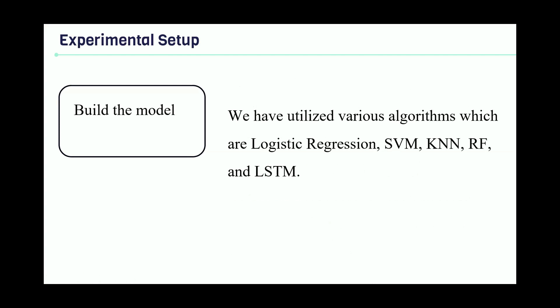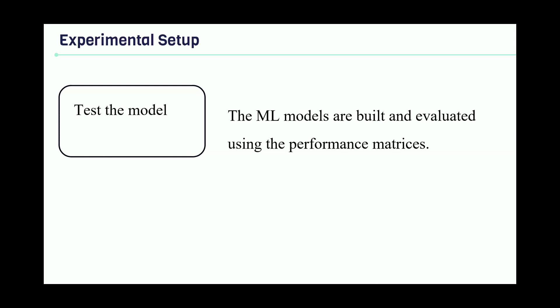Then we try to build our model. When we build our model based on the literature review we did, we try to select the best machine learning algorithms to test our model. So we go with logistic regression, SVM, KNN, Random Forest, and LSTM, these five algorithms. And we test these algorithms based on performance metrics. I will mention the performance metrics in the results stage.